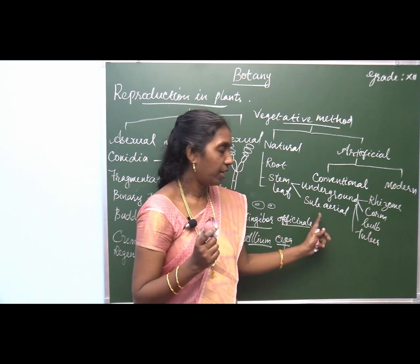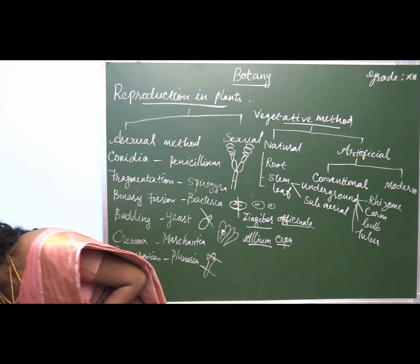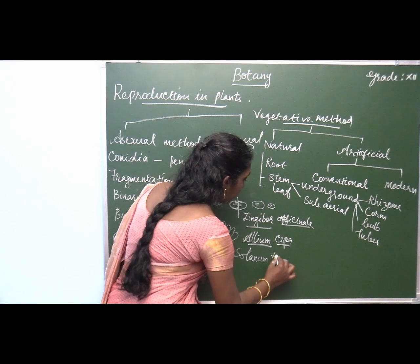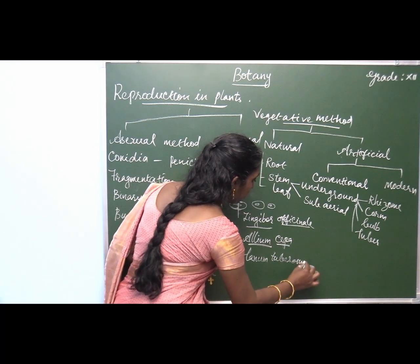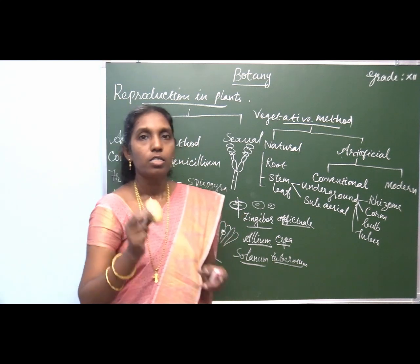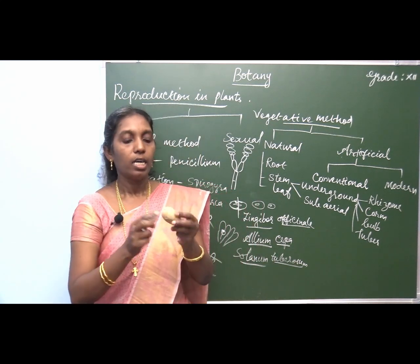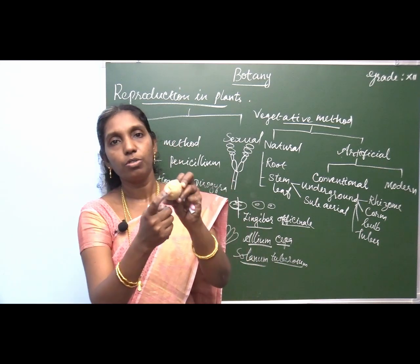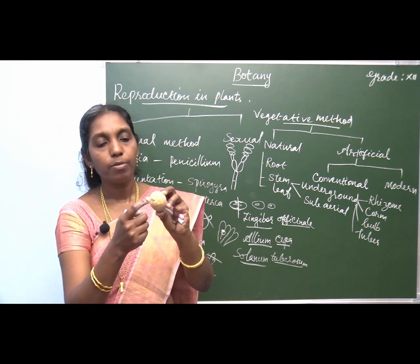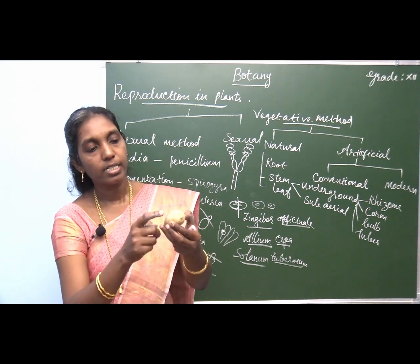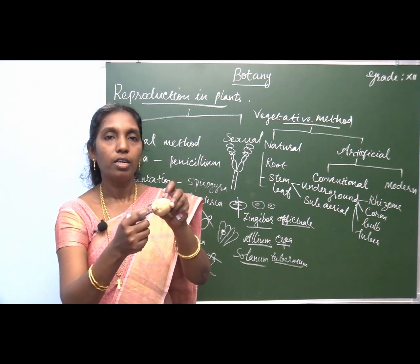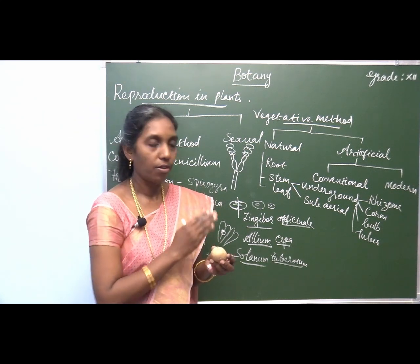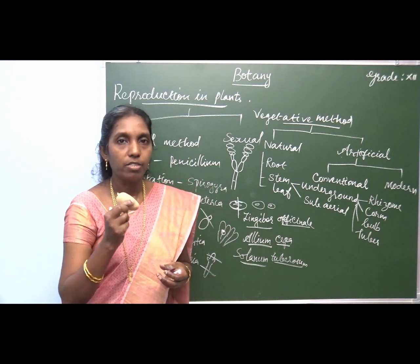Tuber — example Solanum tuberosum, commonly known as potato. Here, there are some eye spots. These eye spots are able to develop into new species when you allow them to grow from this region. The depressions are called eye spots. From these, buds are able to develop, and when detached from the parental one, they develop into individual species.